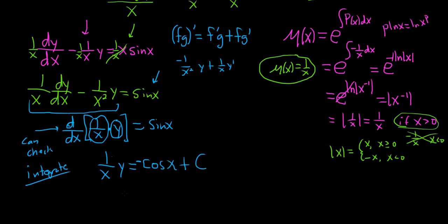Last thing to do is maybe multiply by x. So we get negative x cosine x, and plus cx. So this would be our solution to our DE.